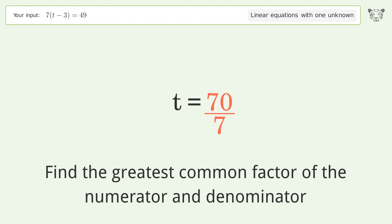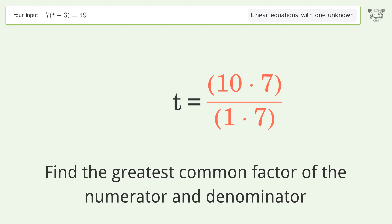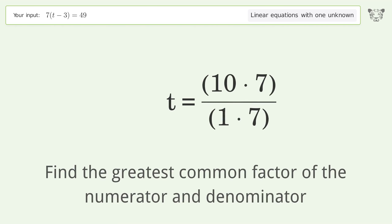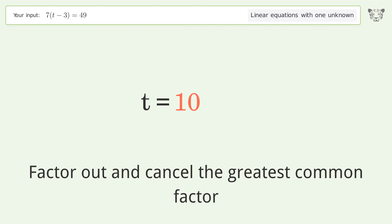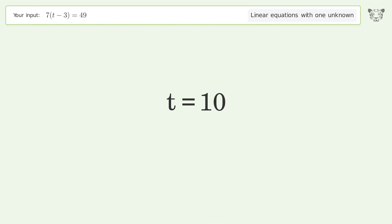Find the greatest common factor of the numerator and denominator. Factor out and cancel the greatest common factor. And so the final result is t equals 10.